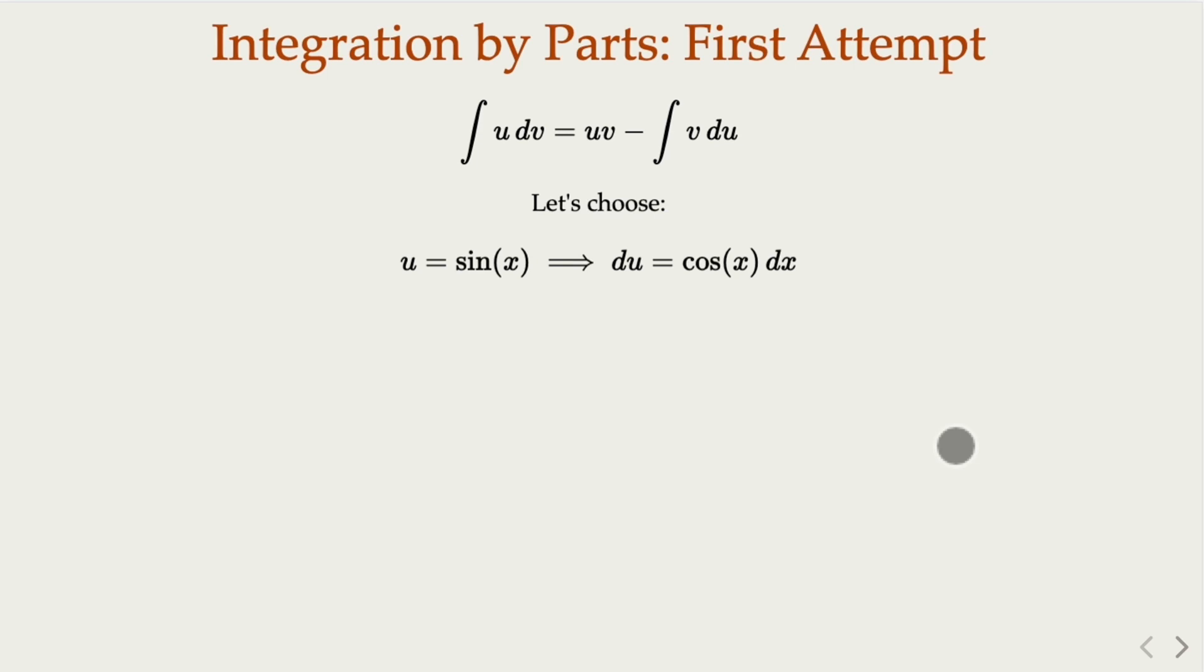Let's choose u as sine x, so du would be cosine x dx. And the other one is dv, which would be 1 over x dx, and v is natural log of x. That's easy. Plug that in.